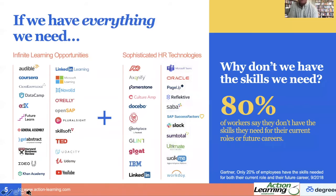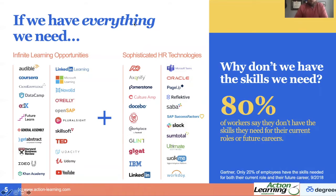So what do we mean here — 80% say they don't have the skills they need. When our company Degreed got started, our founders really started out asking: if we've got everything we need, why do we still not have the skills we need? On the left-hand side, you'll see infinite learning opportunities and all these different technologies. Sophisticated HR technologies, human capital management systems — if all these tools are in our organizations, why did Gartner find that only 20% of employees have the skills needed for both their current role and their future career? That means 80% don't. I would imagine that a lot of our leaders suddenly thrust into a virtual leadership role have struggled with this too — either not having the right access to the tools they have, or just feeling the frustration of being thrust into that role.